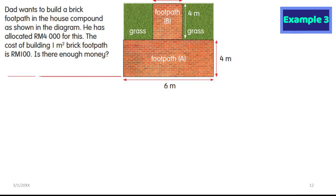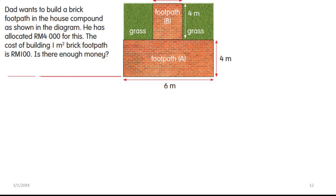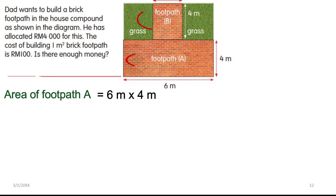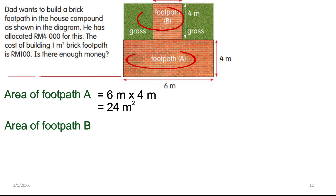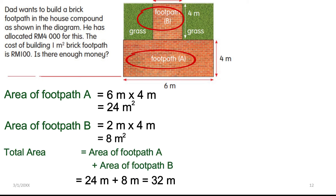Example 3: Dad wants to build a brick footpath in the house compound. He has allocated 4,000 ringgit. The cost of building one square meter of brick footpath is 100 ringgit. Is there enough money? First, find the total area of the footpaths — label them footpath A and footpath B. Area of footpath A is 6m × 4m = 24 square meters. Area of footpath B is 2m × 4m = 8 square meters. Total area of footpaths A and B equals 24 + 8 = 32 square meters.